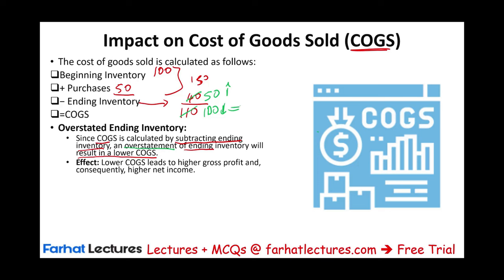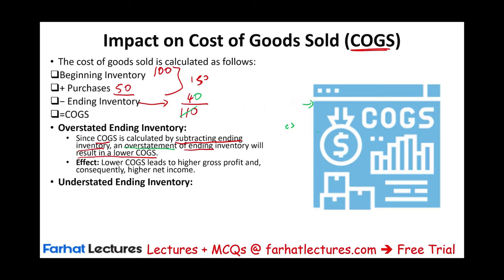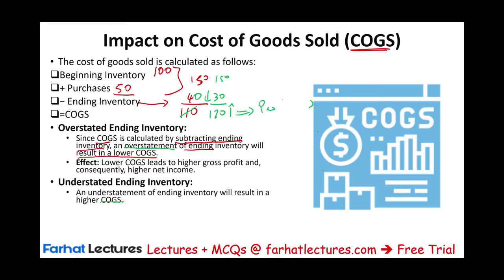If cost of goods sold is lower, profit is higher — higher income, higher taxes. The opposite is also true: if actual ending inventory is 40 but you understate it to 30, then 150 minus 30 gives cost of goods sold of 120 — higher COGS means lower profit and lower taxes. So the relationship between ending inventory and cost of goods sold is inverse: overstate ending inventory and you understate COGS; understate ending inventory and you overstate COGS. They work in opposite directions.